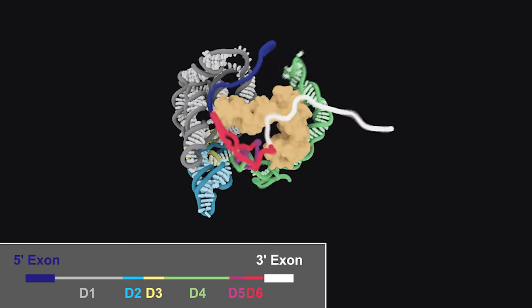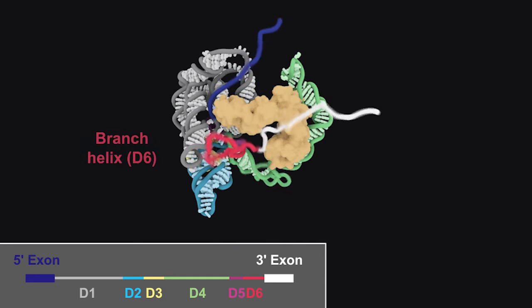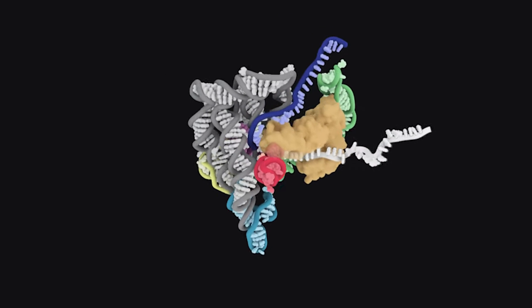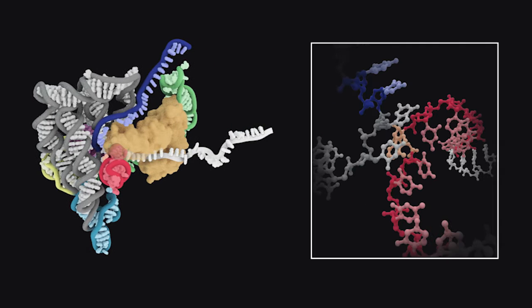The maturase then facilitates docking of domain VI, also called the branch helix, in the horizontal position. Formation of the RMP positions the branch point adenosine close to the 5' splice site.